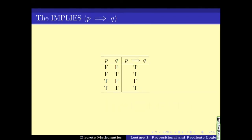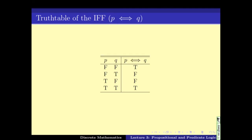Thus the truth table for IMPLIES is: false implies false is true, false implies true is true, true implies false is false, and true implies true is true. Similarly, we have IF AND ONLY IF — I leave you to convince yourself that this truth table also makes sense.